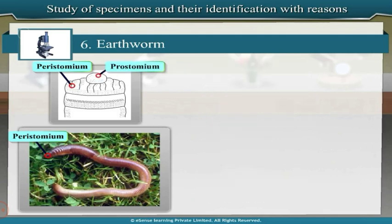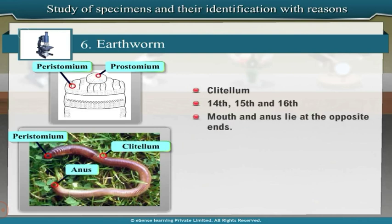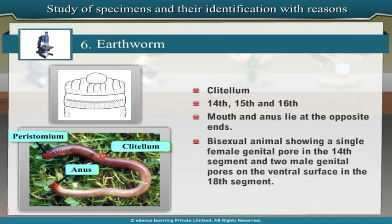A prominent brown colored band called clitellum is present in the anterior region of the body, covering the 14th, 15th and 16th segments. Mouth and anus lie at the opposite ends. Earthworm is a bisexual animal showing a single female genital pore in the 14th segment and two male genital pores on the ventral surface in the 18th segment.